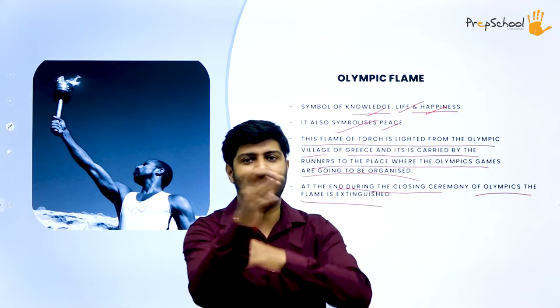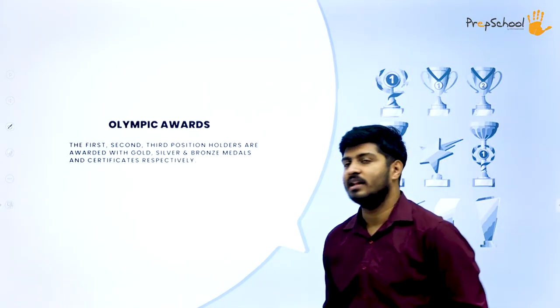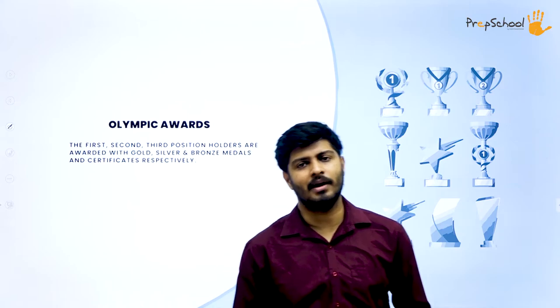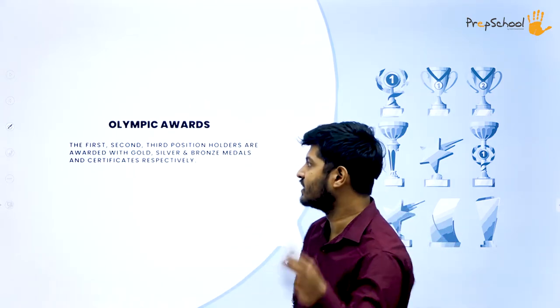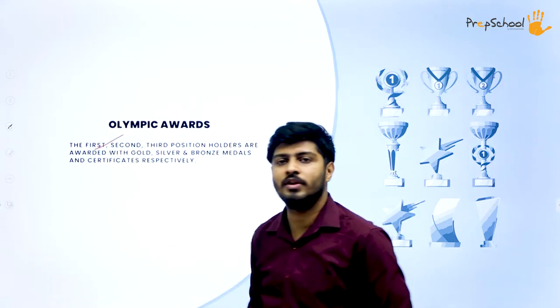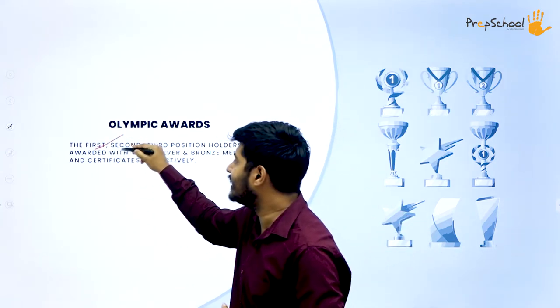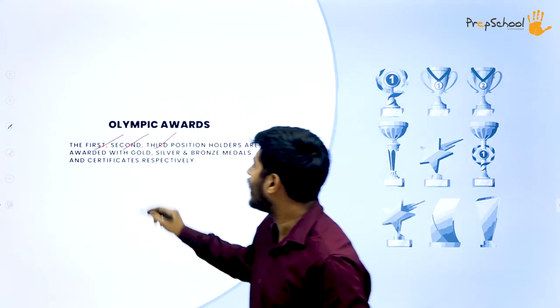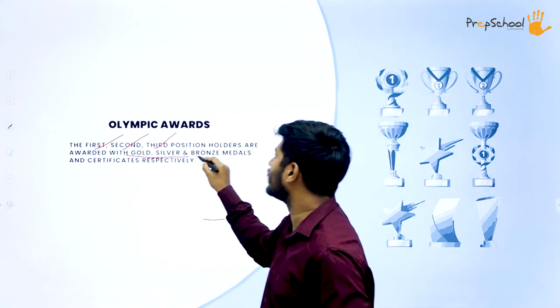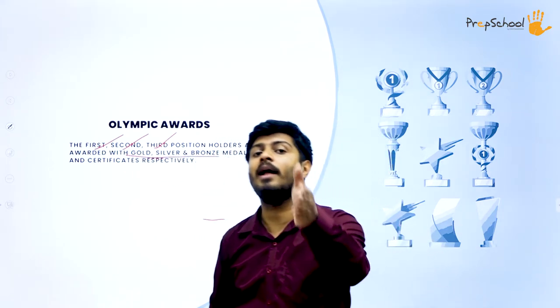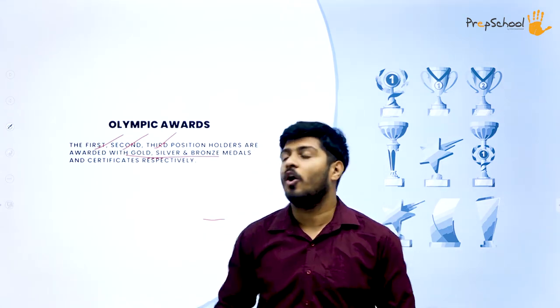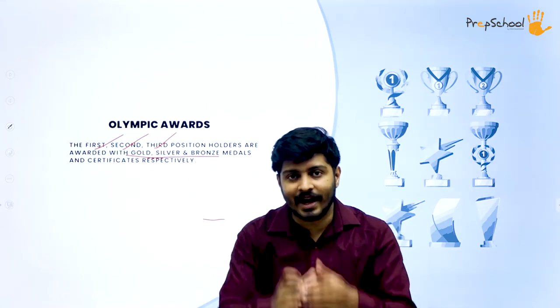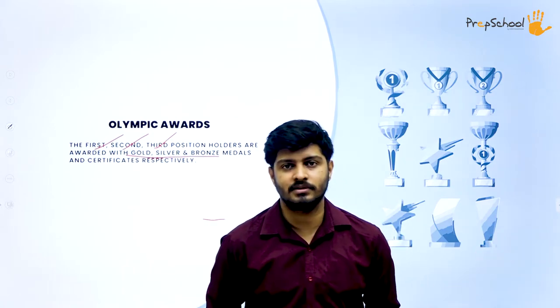Now let's look into Olympic awards. Just like every tournament, in Olympics also the awards are divided into three different categories: the person who comes first is awarded the gold medal, who comes second receives the silver medal, and who comes third receives the bronze medal. Certifications are also given along with those medals.